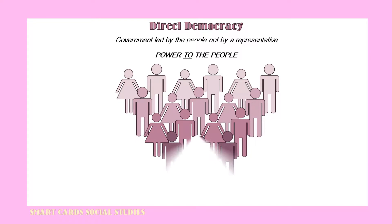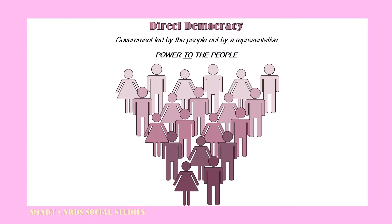In a direct or pure democracy, the government is led by the people and not by representatives of the people. Through debates, deliberations, and votes, laws are established to govern society.